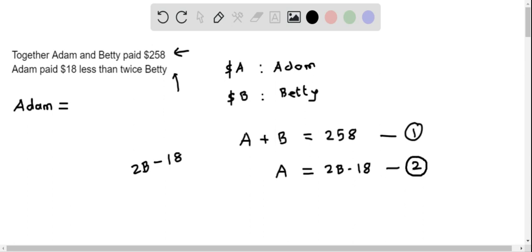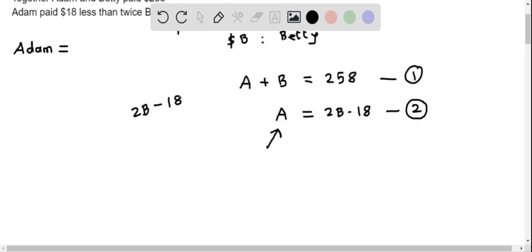We solve this equation for Adam's amount, A. I'll rewrite this equation in terms of B. First, add 18 to both sides, so A + 18 = 2B. From this, I determine B = (A + 18)/2.